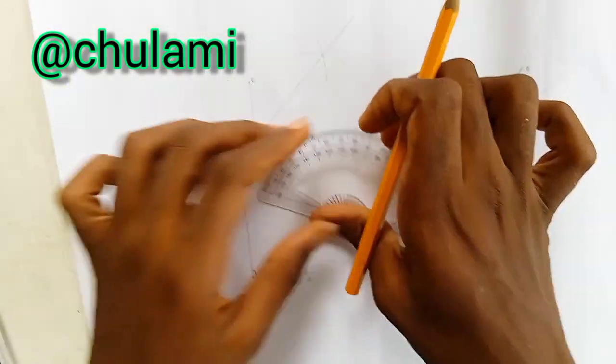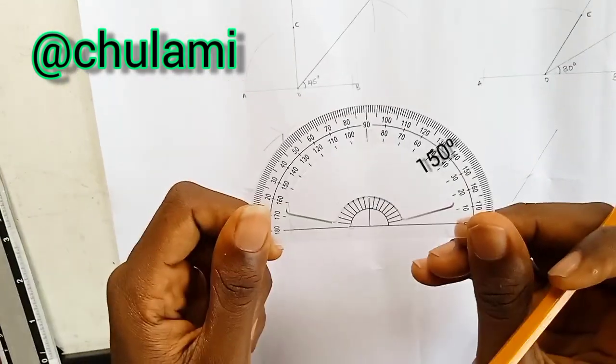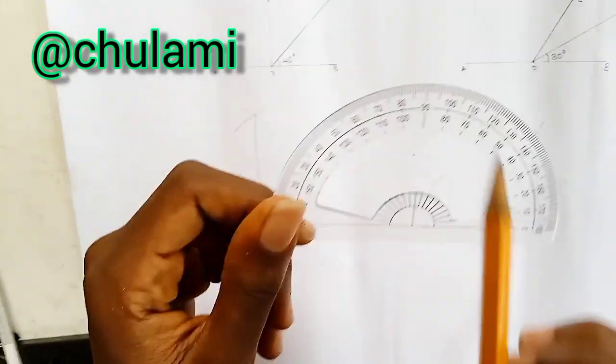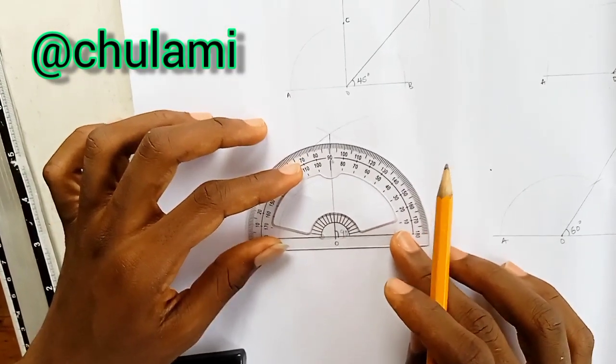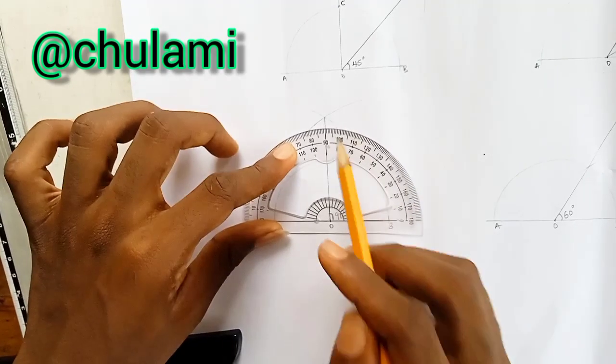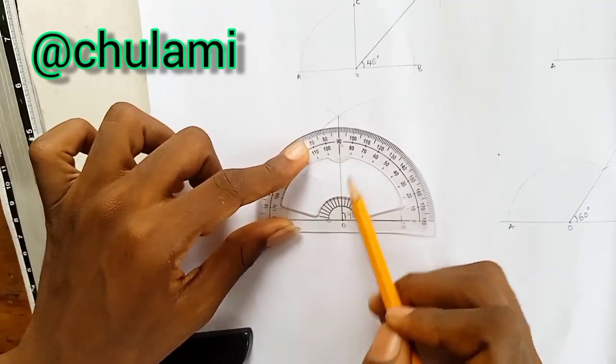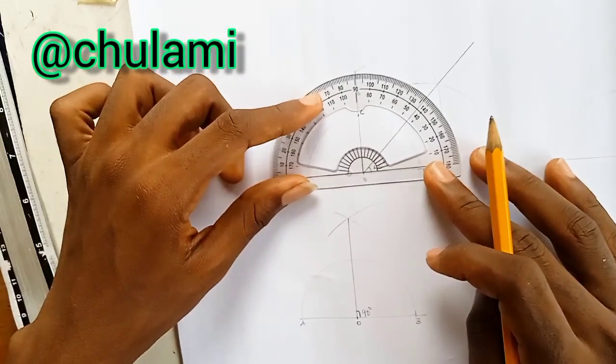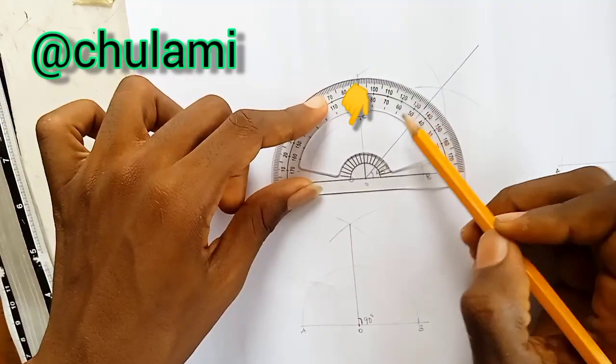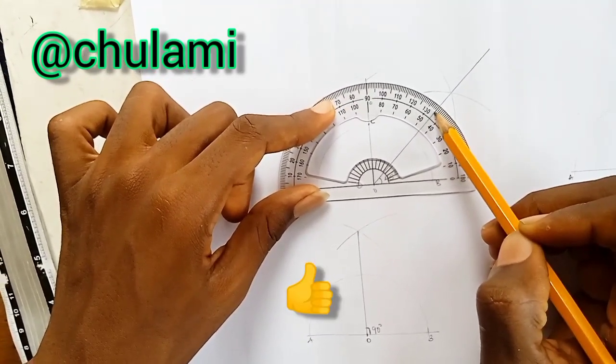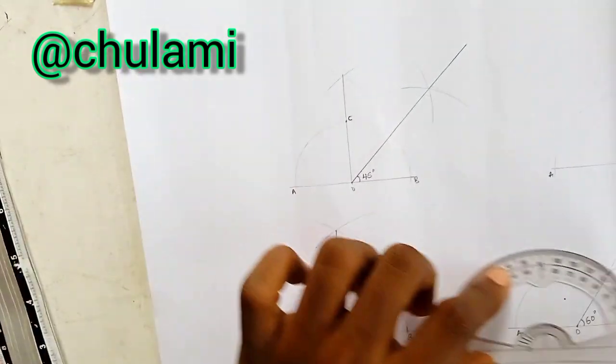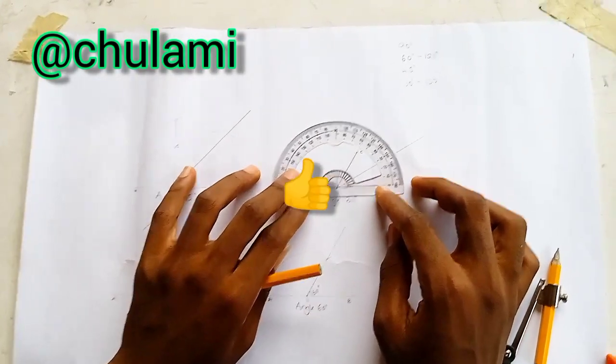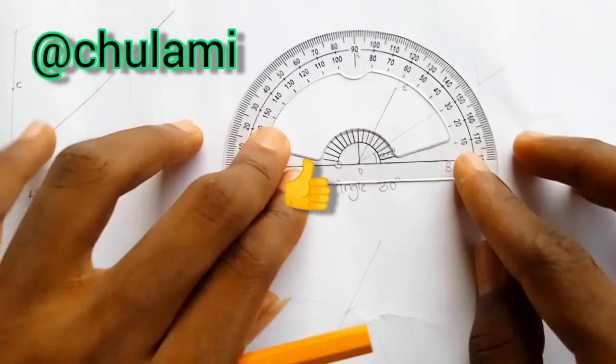Now let's confirm if actually we are correct using a protractor. It's a technical instrument where we use to measure angles. You place it here. Angle 90, the line is at angle 90. So this is 90 degree, very correct. This is 45. Can you see it? Very correct. Coming to angle 60 and likewise at angle 30 degree.